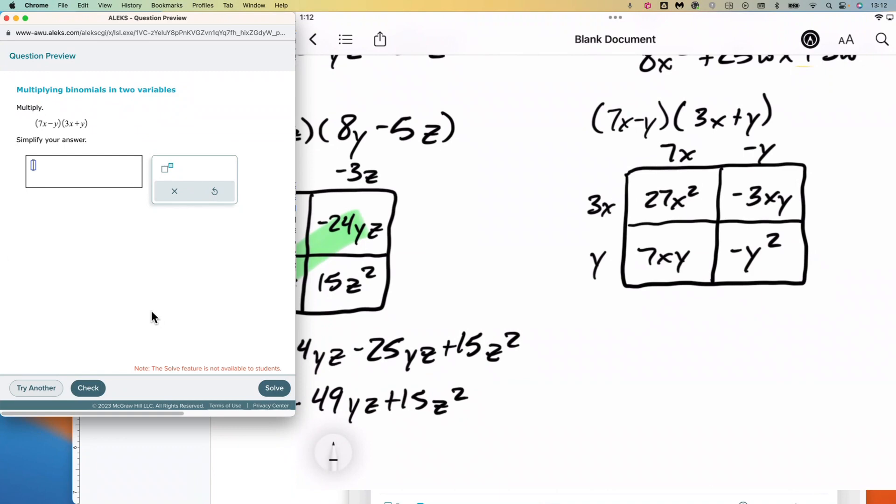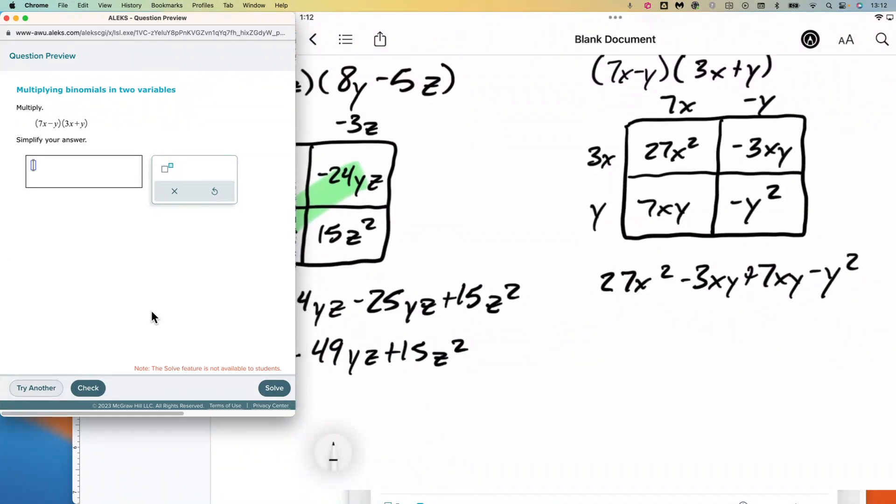Y times negative y is negative y² because one times negative one is negative one, and y times y is y². So we've got 27x² minus 3xy plus 7xy minus y². And that gives us 27x². The negative three and the positive seven make positive 4xy minus y².